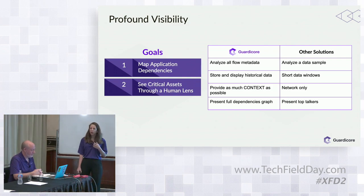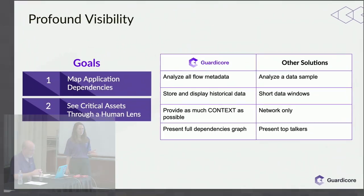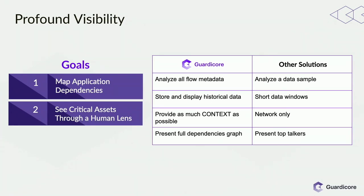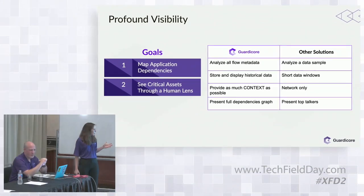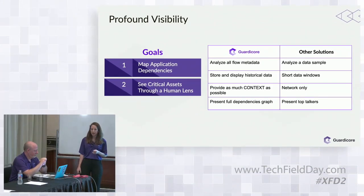The goals of our visibility solution: first, to map application dependencies. You have to understand what's happening in your data center to take control of it. If you don't understand or visualize what's going on, it's much harder to make data-driven decisions. The second goal is to visualize everything from a human lens — not a log of all your connections that you have to sift through, but a single pane of glass with lots of context.